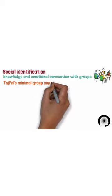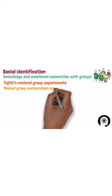Tajfel's minimal group experiments demonstrate how even minimal group memberships can create in-group bias and affect individuals' attitudes and behaviours.